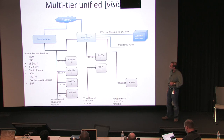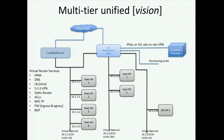I talked about static routes. The vision is that you can also configure BGP so that you don't have to configure static routes manually — it will exchange routes with your VPN gateway at the other end, so you automatically know where to route into the VPN. This is vision; some of it is coming, but not all of it.